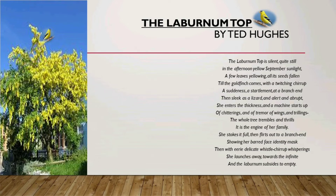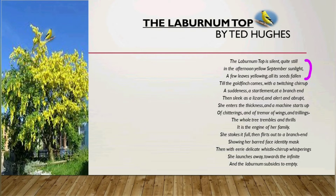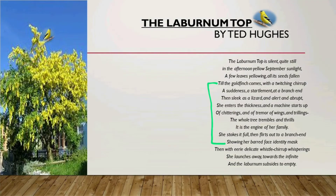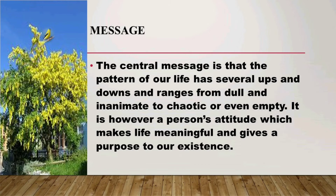The poem is divided into four stanzas of uneven length. The first three lines are indicative of decay and preparation for new life. The second stanza comprises nine lines depicting how the arrival of the goldfinch brings thrill and excitement. The third stanza demonstrates how, after ensuring the well-being of its family, the goldfinch leaves. The last stanza of one line shows what happens when the soul leaves the body. The central message is that life has several ups and downs, ranging from dull and inanimate to chaotic or even empty, but it is a person's attitude which makes life meaningful and gives purpose to one's existence.